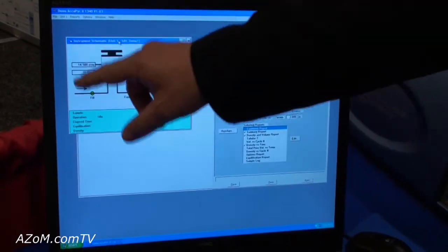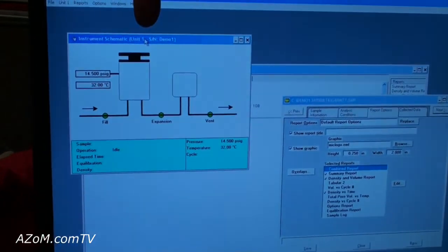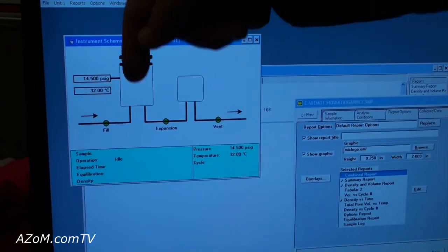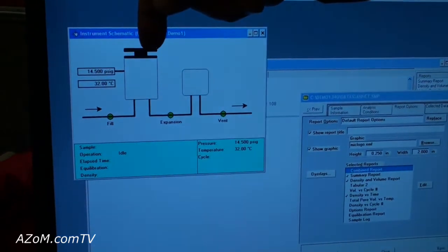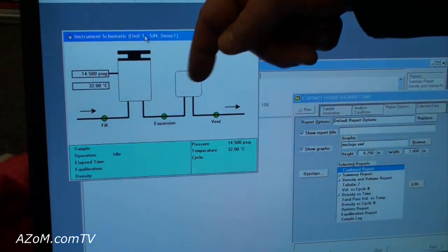Just to show you a little bit of how the instrument is designed, this is a schematic representation of what you saw previously looking at the instrument. This is the sample chamber with a cap for it and what is called an expansion chamber.